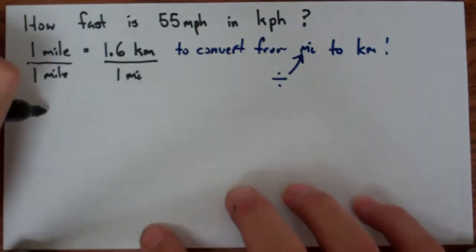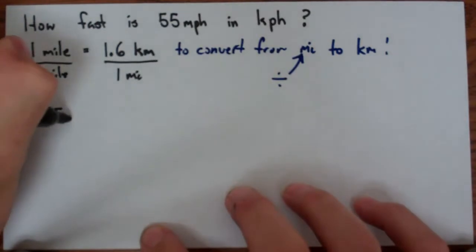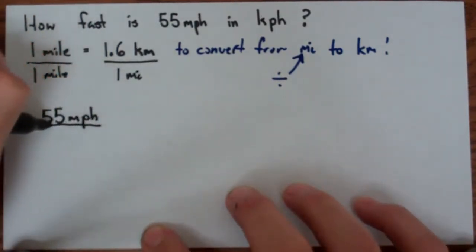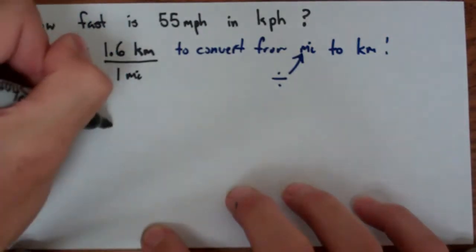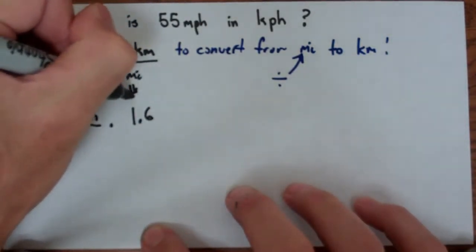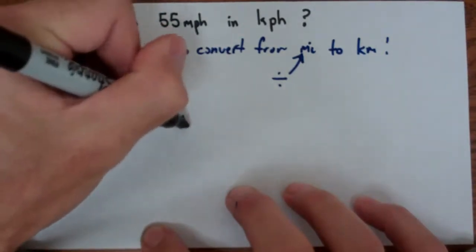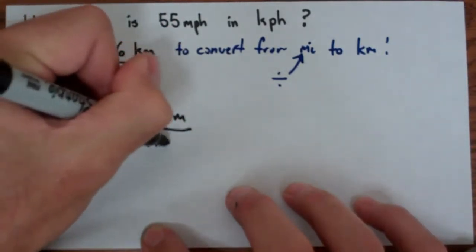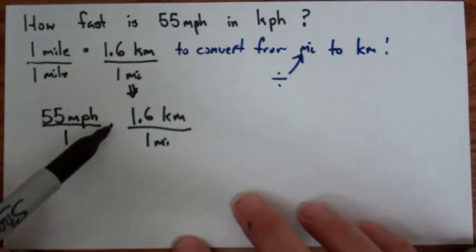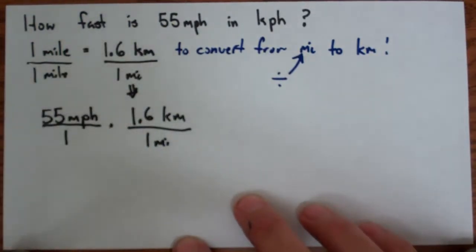And so I'm going to end up with, I have 55 miles per hour. I'm going to rationalize that by putting it over 1. I'm going to multiply that by my unit conversion here, the 1.6 kilometers per 1 mile. So rationalize the denominator, multiply by the unit conversion.